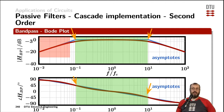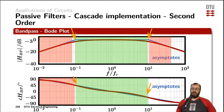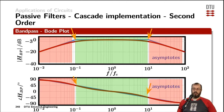For the bandpass, we have two stop bands. One for the low frequencies where the phase is getting turned by 90 degrees and the signal rises with plus 20 dB per decade, and at the high frequencies where the signal falls with minus 20 dB per decade and the phase is turned to minus 90 degrees.